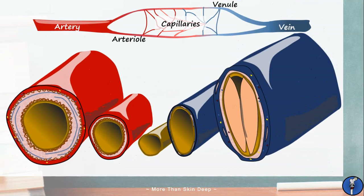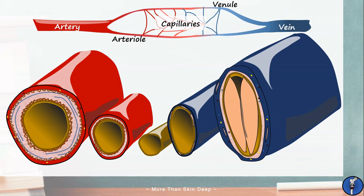Here's a side-by-side comparison of all five blood vessels. They're not drawn to scale but take a minute to appreciate the differences in their structures before we move on.